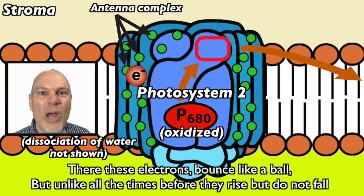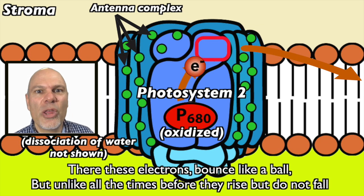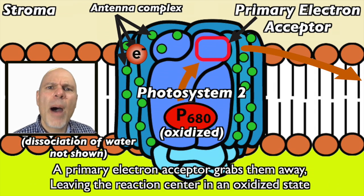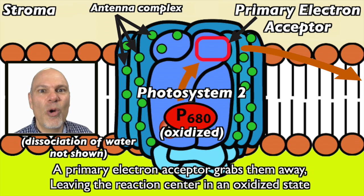There, these electrons bounce like a ball. But unlike all the times before they rise but do not fall, a primary electron acceptor grabs them away, leaving their reaction center in an oxidized state.